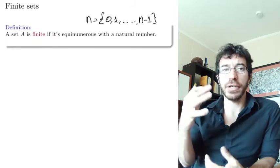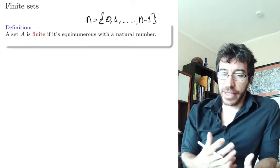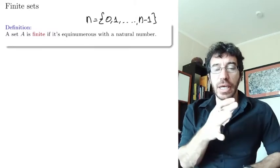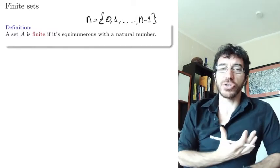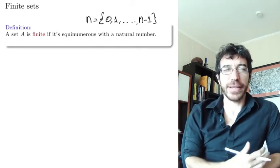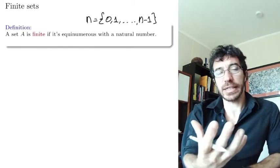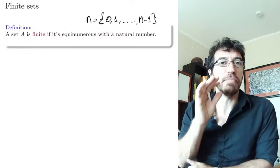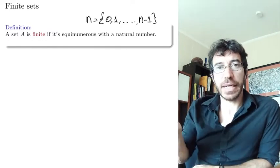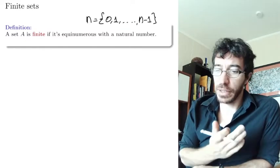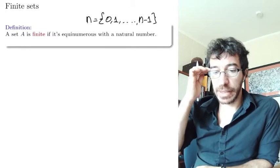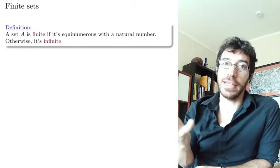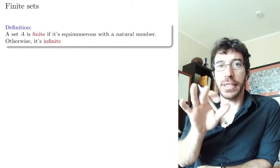Remember, if you're not using what we know from before and are starting from scratch, then a natural number is just something that belongs to all inductive sets. So it's quite an abstract definition. A set is finite if it's equinumerous with something that belongs to all inductive sets. So infinite means there is no bijection between the set and any natural number.